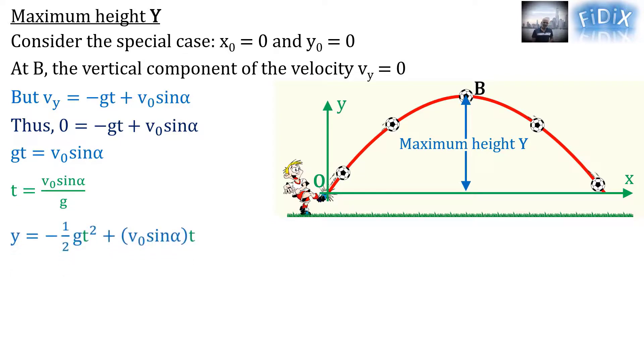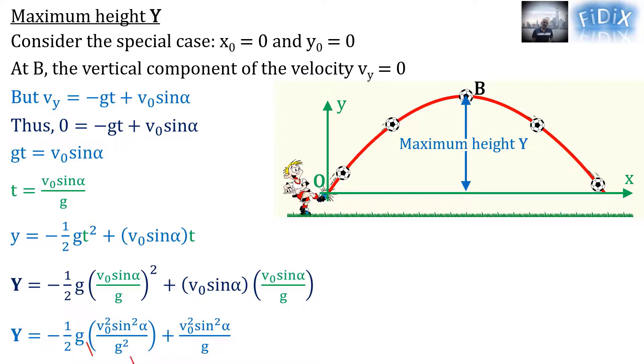Then in the equation giving the ordinate y of the center of mass, we replace t by its expression and get an equation in which we can cancel g. We can cancel g in one part and multiply numerator and denominator by two in the other part.